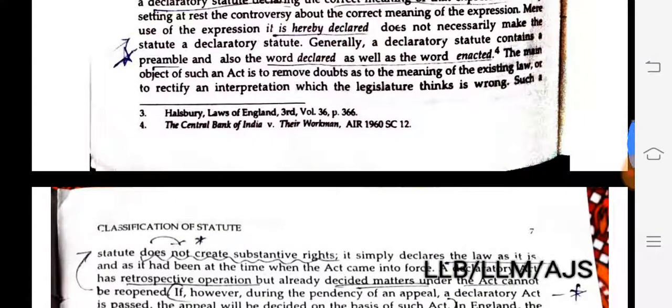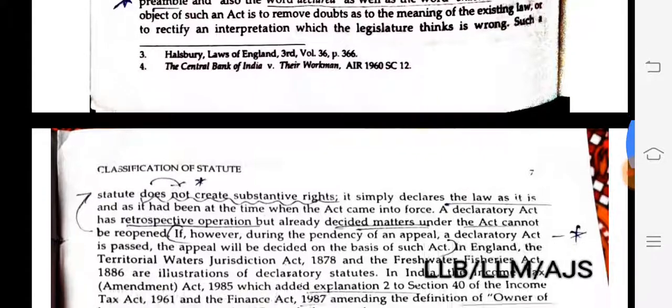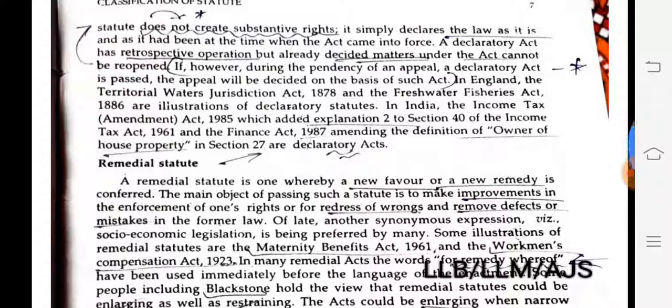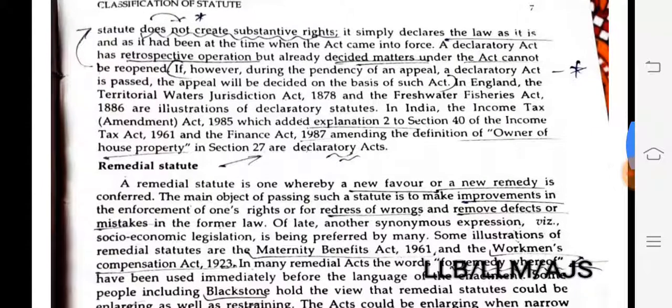Mere use of the expression 'to be declared' does not necessarily make the statute a declaratory statute. Generally, a declaratory statute contains a preamble and also the words 'declared' as well as 'enacted.' The main objective is to remove doubts as to the meaning of the existing law or to rectify an interpretation which the legislature thinks is wrong. Such a statute does not create substantive rights — it simply declares the law as it is and as it had been.